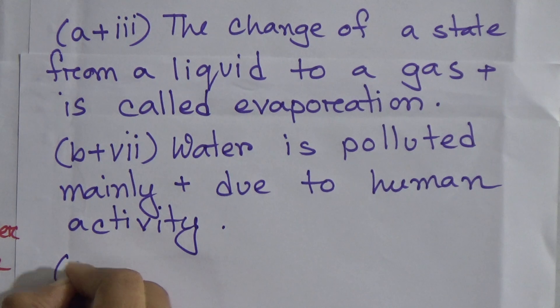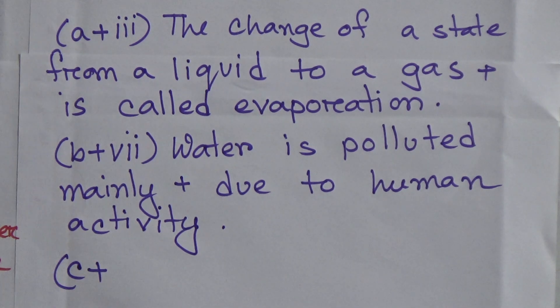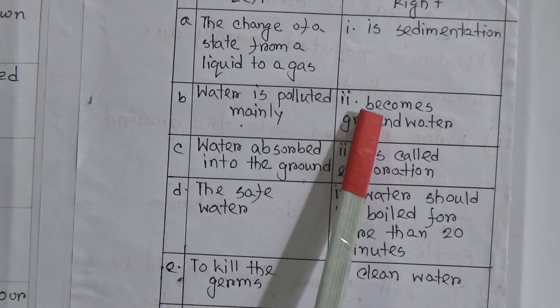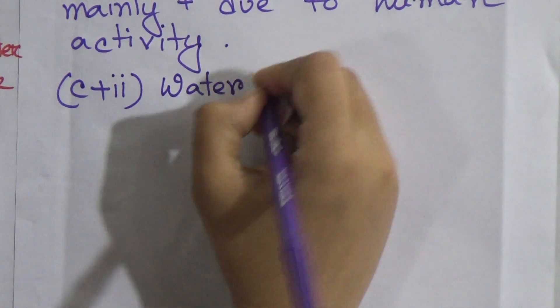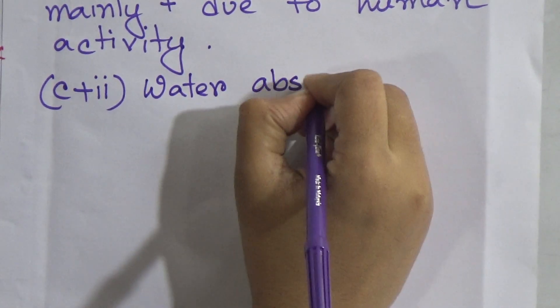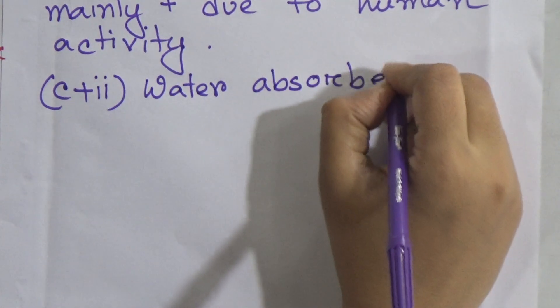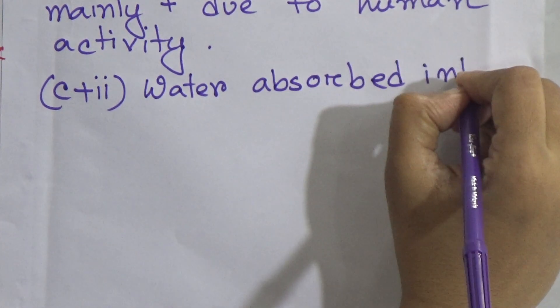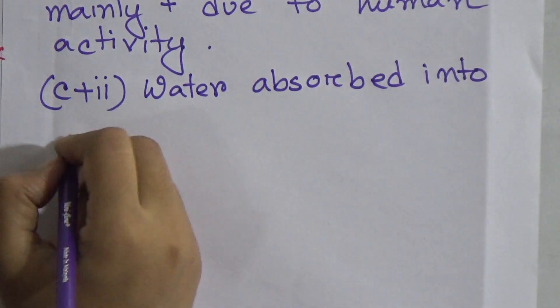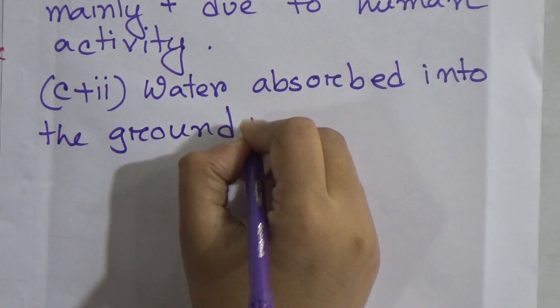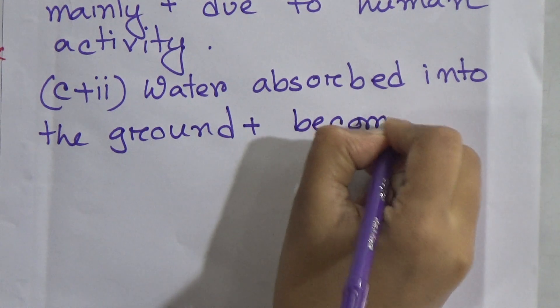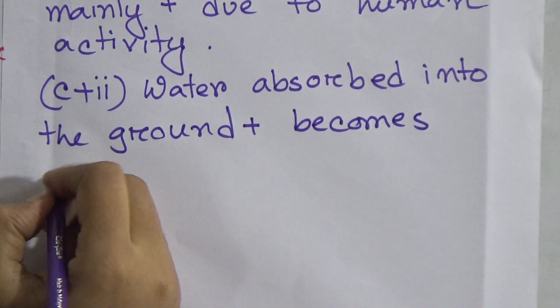Now come to the third one: C — water absorbed into the ground — it will match with 2, becomes ground water. Water absorbed into the ground becomes ground water.